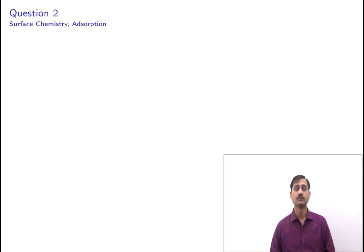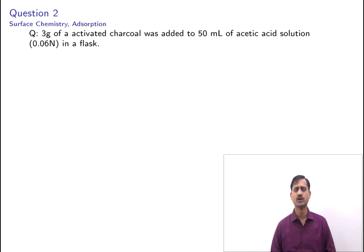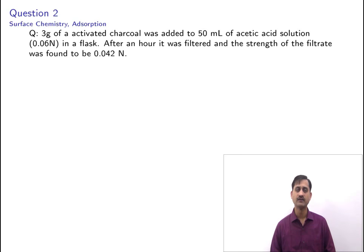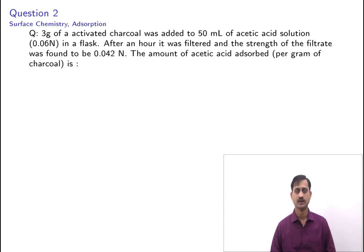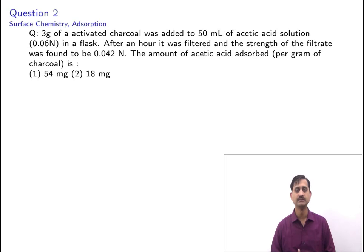The second question is from the chapter surface chemistry, subtopic adsorption. The question states: 3 grams of activated charcoal was added to 50 mL of acetic acid solution (0.06 normal) in a flask. After an hour it was filtered and the strength of the filtrate was found to be 0.042 normal. The amount of acetic acid adsorbed per gram of charcoal is: 54 mg, 18 mg, 36 mg, or 42 mg.